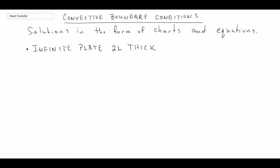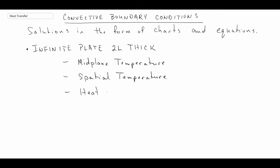The geometry I refer to as the slab — which is probably not technically correct — is an infinite plate 2L thick. We're going to be solving first for temperature at the midplane as a function of time, and from that we will be able to get the spatial temperature at some point off the midplane at a specific time. The last thing we'll be able to calculate is the heat loss from this slab up to whatever point in time we are examining.